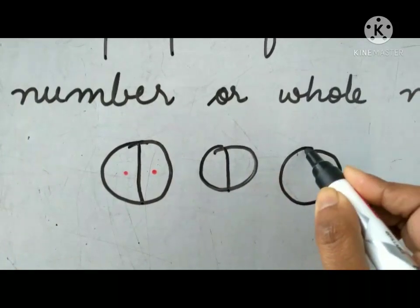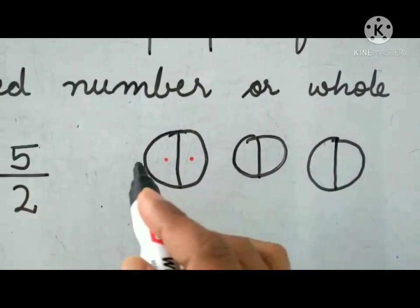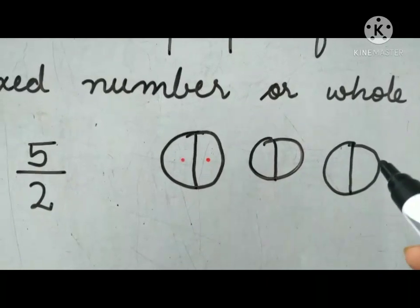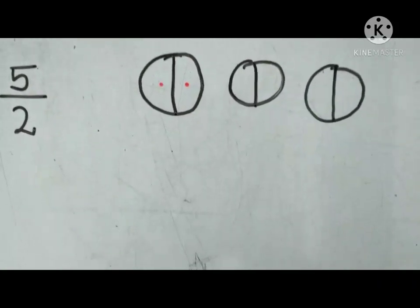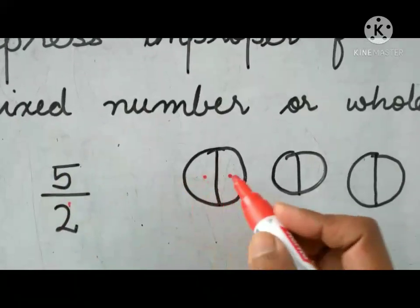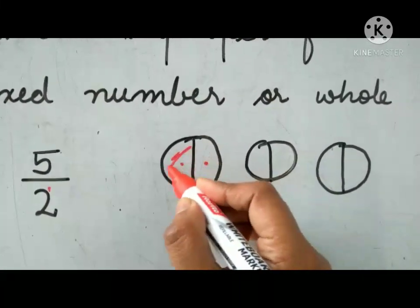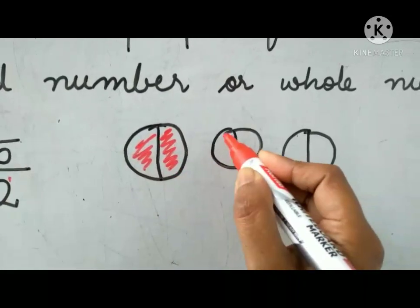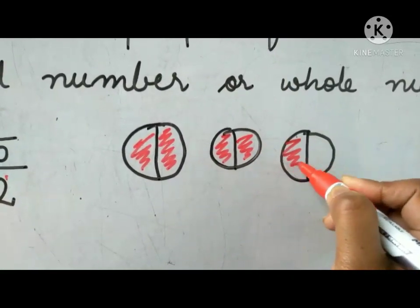Draw one more circle and divide it into two equal parts. All the figures have to be divided into two equal parts because two is the denominator. Then shade five parts. Let's start shading: one, two, three, four, five.